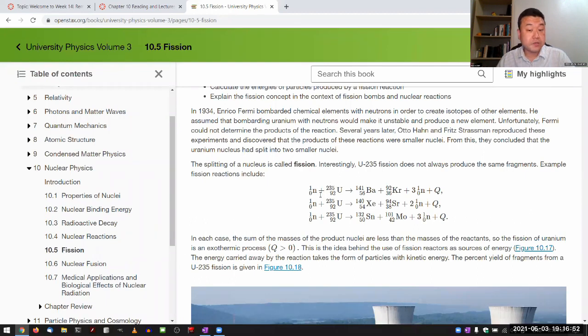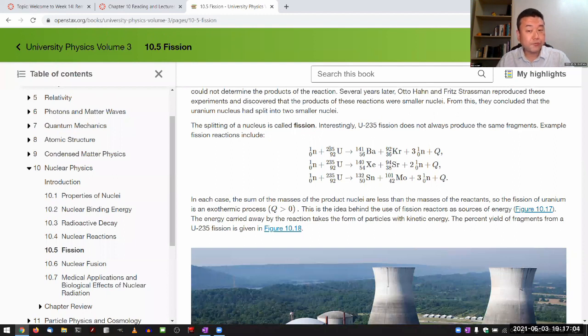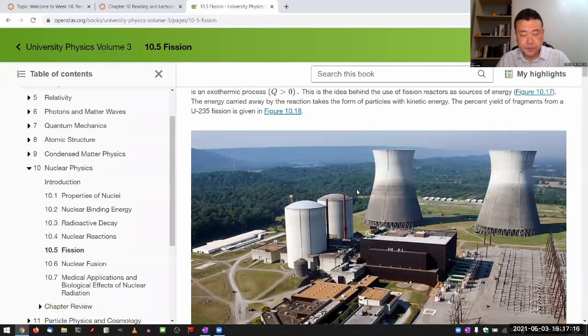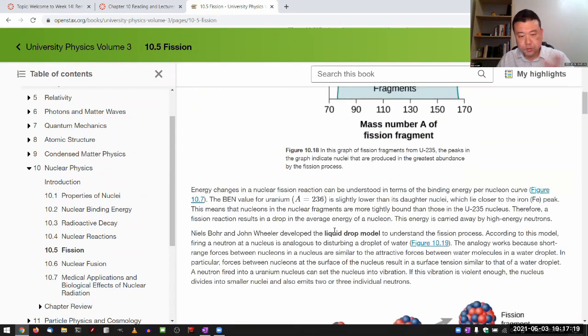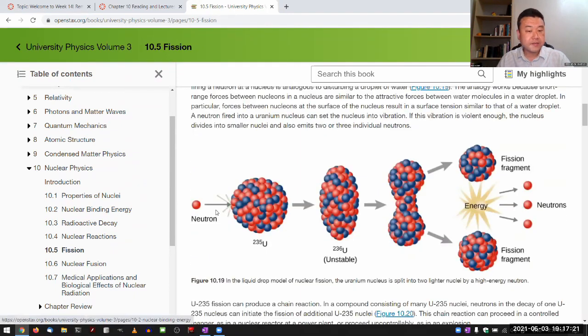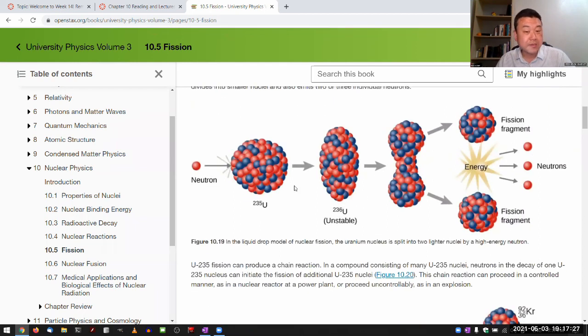This fission reaction doesn't happen with every type of nucleus or isotope. There are certain isotopes with which that happens. Uranium-235 is one of them—that's why they're used in nuclear reactors and atomic bombs. Plutonium-239 is another one. This is the discussion of the fission reaction, and this is the schematic model of how it's happening. Uranium-236 is not something you ever see—the time in which this impacted isotope decays into daughter nuclei is very quick, like immeasurably quick.